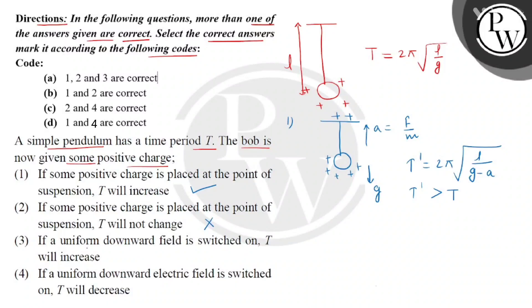Now the third statement is that if a uniform downward field is switched on, T will increase. Let's draw a picture for the third - this is the bob. The bob has positive charge. And if we switch on the downward field, then this positive charge will act in the downward direction due to this electric field, which will be in the same direction as G.